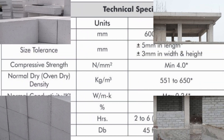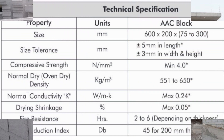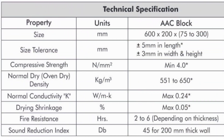Let's look into the technical specifications of AAC blocks. The size is 600 mm in length and 200 mm in height, with width varying from 75 mm to 300 mm (3 inches to 12 inches). Size tolerance is plus or minus 5 mm in length and plus or minus 3 mm in width and height.